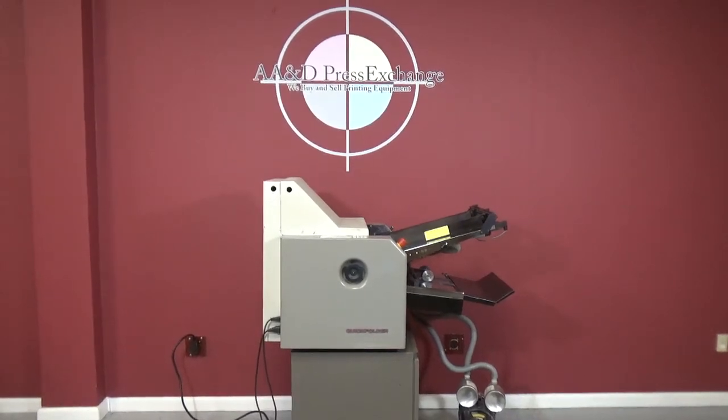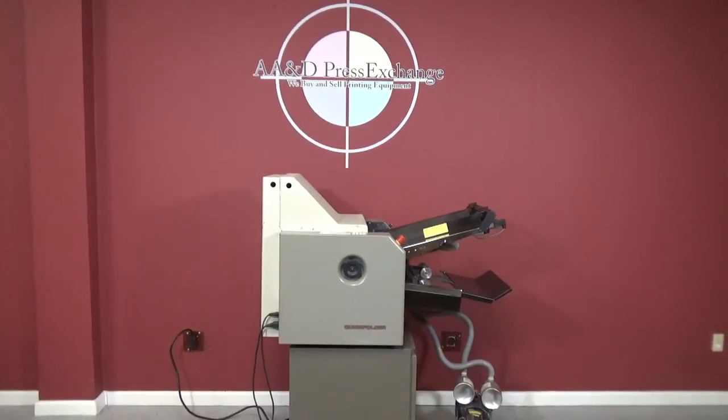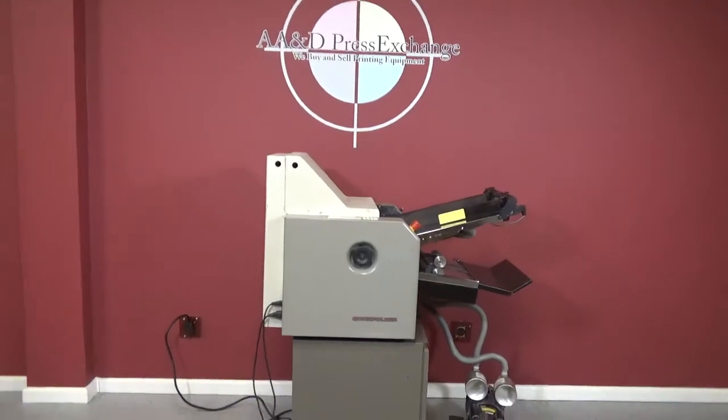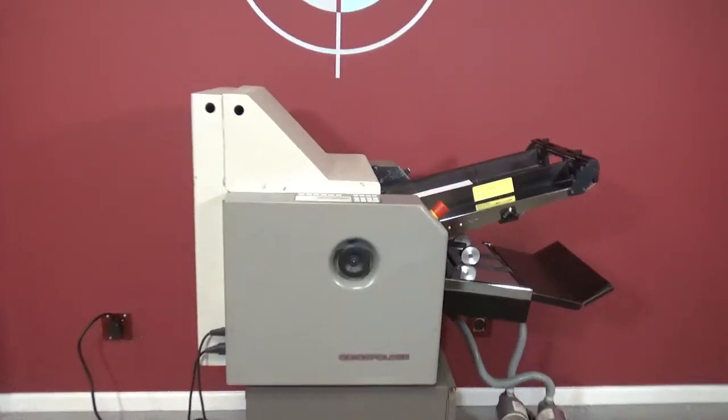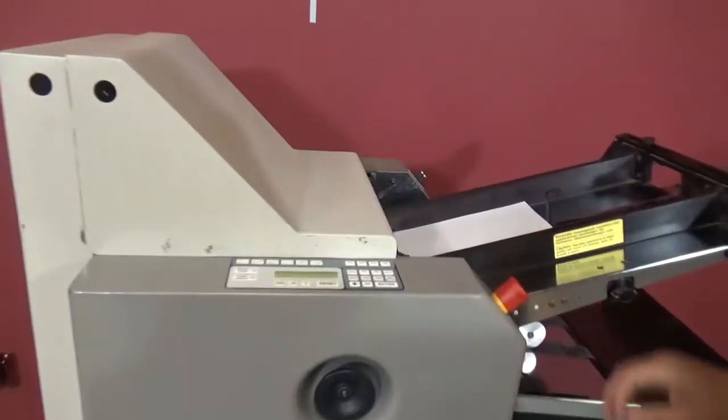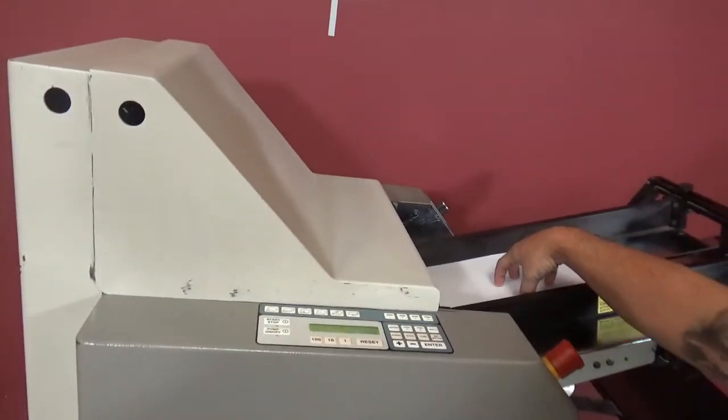Up for auction is an air-fed automatic Stahl-Heidelberg Quick Folder, model T-34. This is fully automatic, all the way from how it reads the size of your paper.